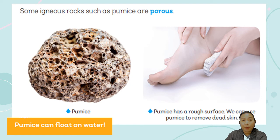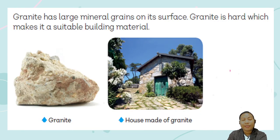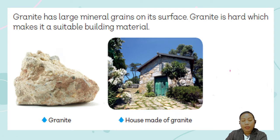Another kind of igneous rock is granite. Granite has large mineral grains on its surface. Granite is hard, which makes it a suitable building material. We can use granite to build houses. People in primitive times used this kind of rock to make their houses.